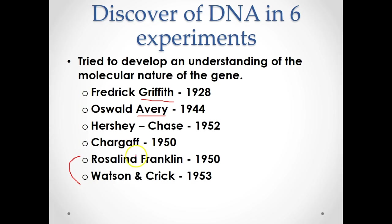Rosalind Franklin used X-ray crystallography and was able to take an X-ray picture of a chromosome and the structure of DNA. Watson and Crick used her pictures a few years later to build their three-dimensional model of DNA. There is a significant controversy because Watson and Crick could have used her work without her permission or credit, yet they ended up winning the Nobel Prize in 1953 for producing a three-dimensional model of the structure of DNA.